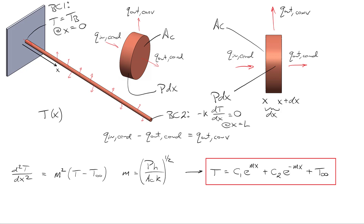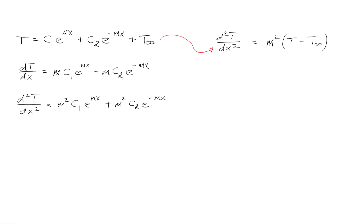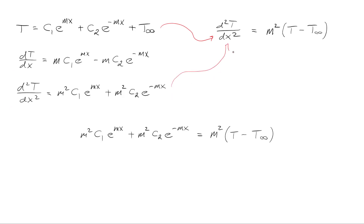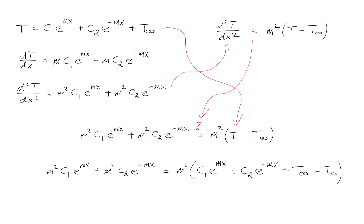To verify that this expression is a solution to the differential equation, we differentiate it twice to get two expressions, then plug the result into the left-hand side. The question is whether the two sides are equivalent. We take our expression for temperature, plug it into the right-hand side, and find that the ambient temperature T_infinity cancels out — confirming that our expression is indeed the solution.